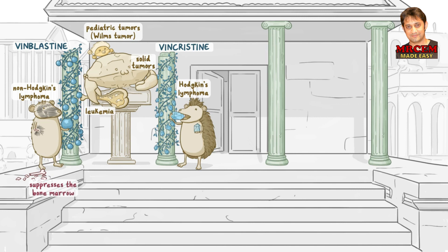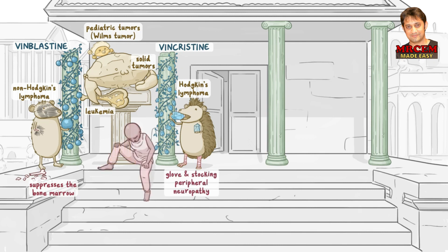For vincristine, the little hedgehog's legs are covered in bandages to help you remember the glove and stocking peripheral neuropathy. For the shared side effects, there's a bald man sitting by the statue for alopecia, and he's vomiting at the foot of the statue, representing the GI side effects.